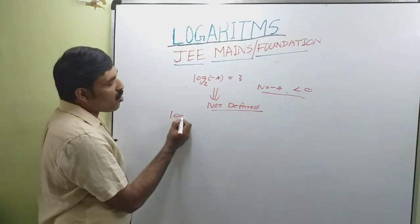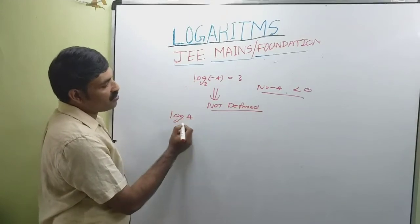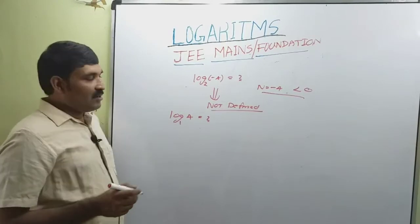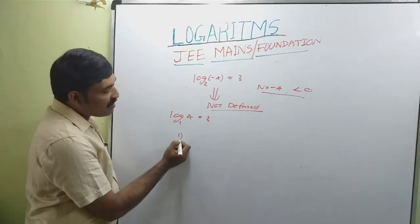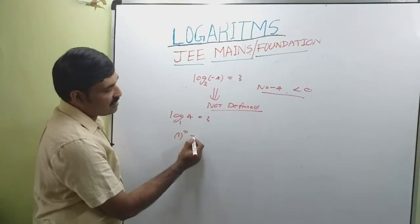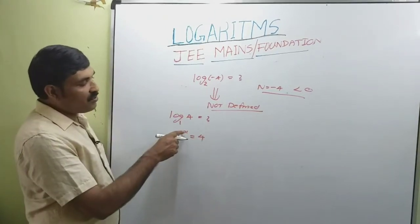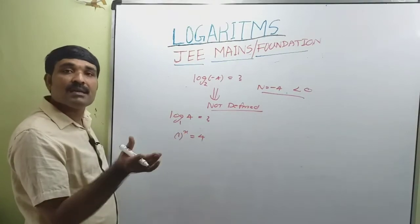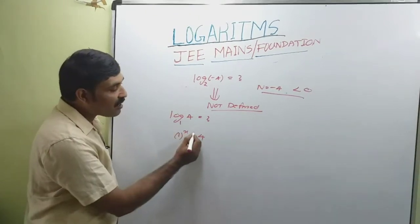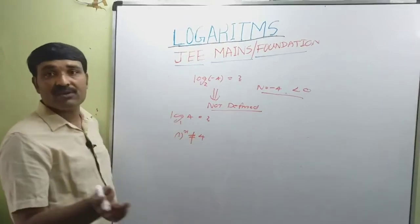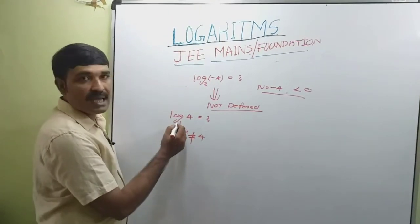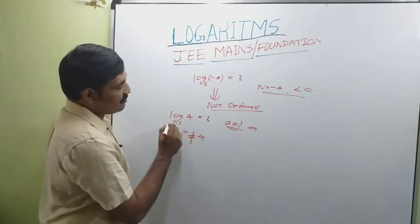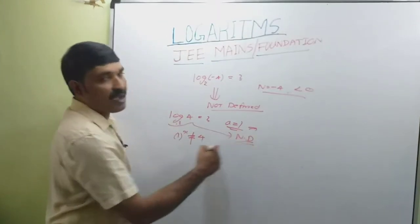Now consider log of 4 to the base 1. This means 1^x = 4. But 1 raised to any number is always equal to 1, which never equals 4. So 1^x ≠ 4. Since base a = 1, this is not defined.